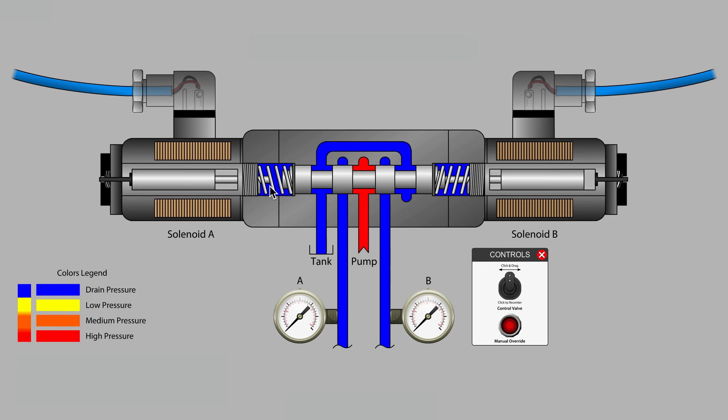When we energize solenoid A, the armature and pushpin get a running start against the spool as this gap is closed.